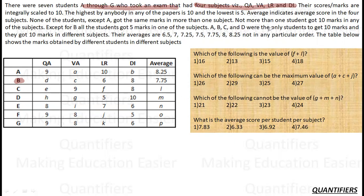A, B, C, and D were the only ones to get 10 marks, and they got 10 in different subjects. So one 10 is in LR, one in DI, one in VA, and one in QA. Since there is only one place in VA, C must be 10 there, and D must be 10 in DI. This was very easy to map. Their averages are given and we will use those to answer the questions.